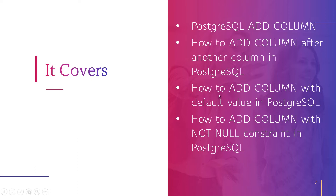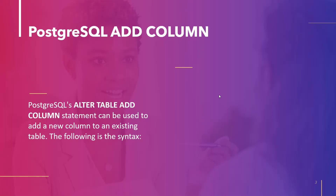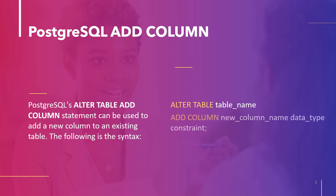Now moving to the first topic: PostgreSQL Add Column. To add a new column to an existing table in PostgreSQL, we can use the ALTER TABLE ADD COLUMN statement. The syntax is: ALTER TABLE, table_name, ADD COLUMN, new_column_name, data_type, and then the constraint of that column.